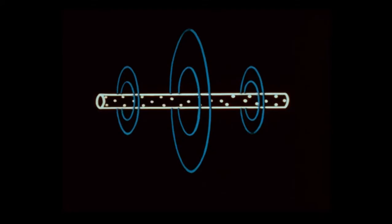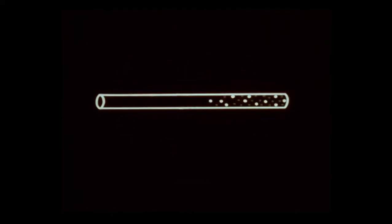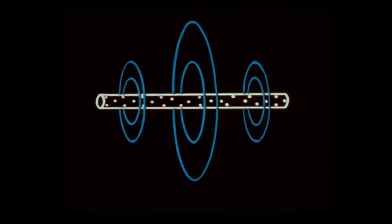This electron flow creates a fluctuating magnetic field. Let us relate the direction of this field to the electron flow. As the electron flow reverses, the magnetic field is at a maximum and the lines of force are in this direction.